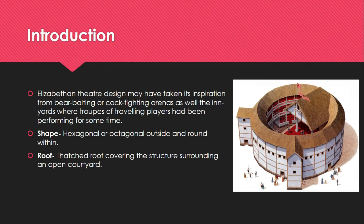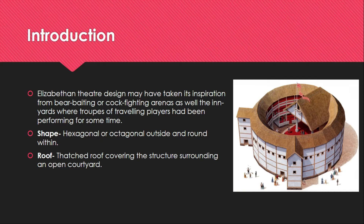This particular structure was inspired by bear-baiting or cockfighting arenas, and also inn yards where these troops performed their plays. Regarding the shape, it was either hexagonal or octagonal outside — it could even be round — but hexagonal and octagonal shapes were the most common shapes in which we find Elizabethan theater.